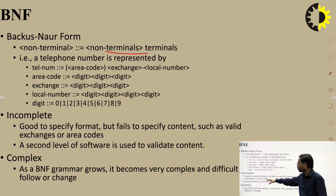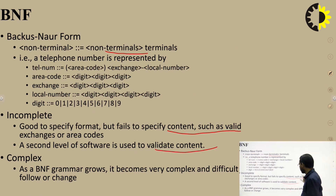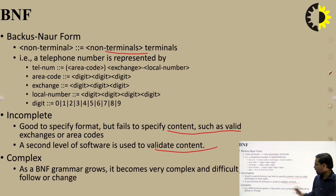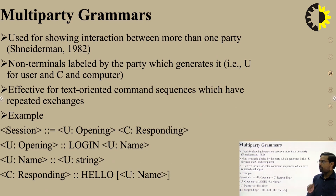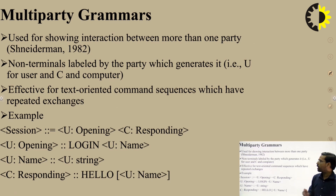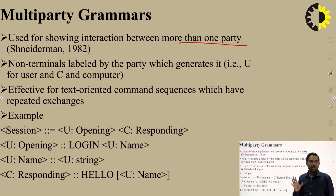BNF is good for specifying format but fails to specify content such as valid exchange or area codes. A second level of software is used to validate the content. As a BNF grammar grows, it becomes complex and difficult to follow. Multi-party grammar is used to show interaction between more than one party, following the standard from 1982.